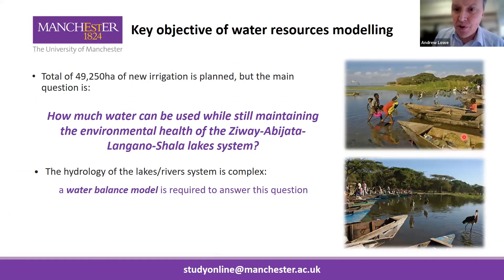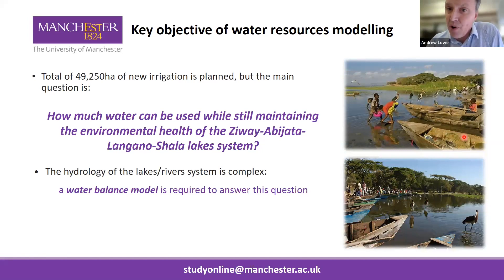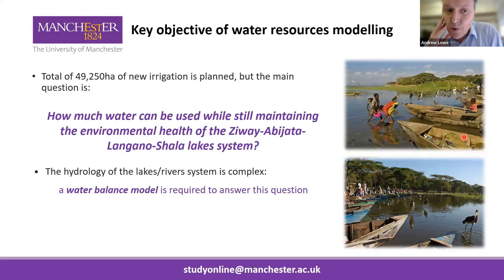These lakes are important for providing fish to local communities, water for irrigation for local farmers and families, and for the flower industry to generate export income for the government. However, there has been a plan to expand irrigation for food security within the Rift Valley — proposals to increase irrigation areas to approximately 49,000 hectares of new irrigation. That requires water coming from the rivers that feed into those lakes. We need to understand: can those lakes support that amount of irrigation, and what is the impact on the health of those lakes and the environment?